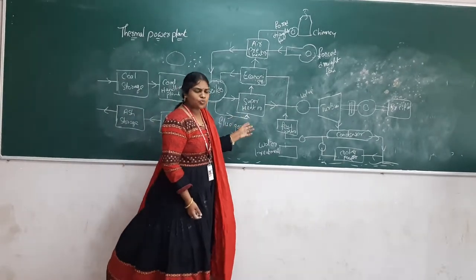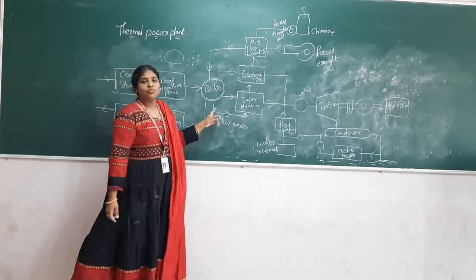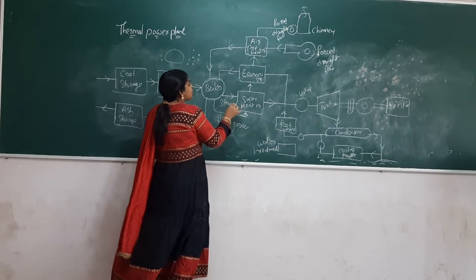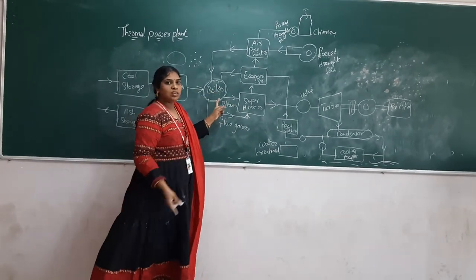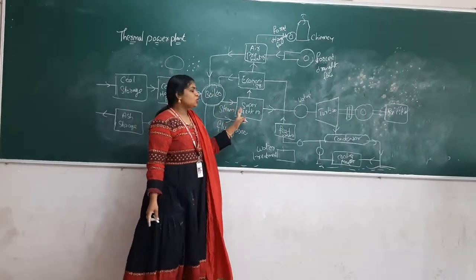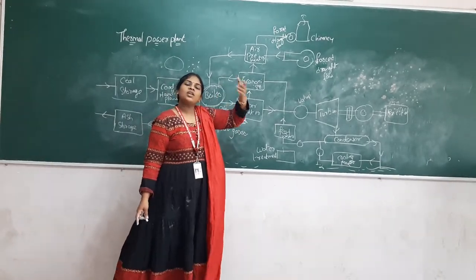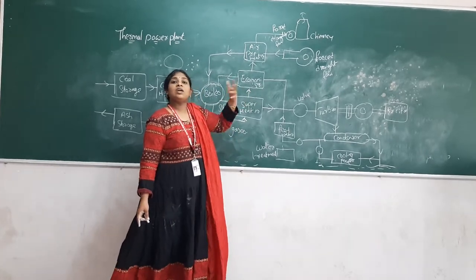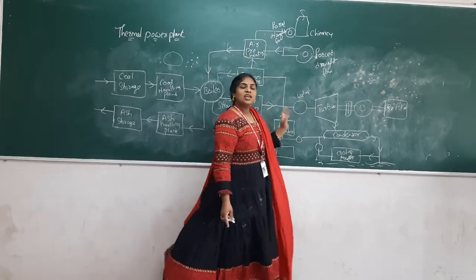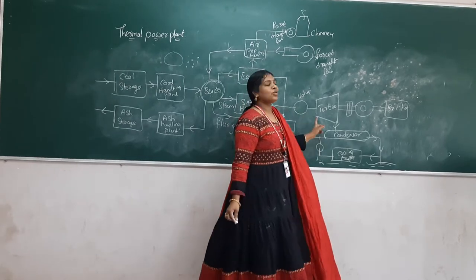Next is the superheater. The task of the superheater is to increase the pressure of the steam produced in the boiler. Whatever water is boiled above the boiling point in the boiler converts into steam. That steam is pumped through tubes to the superheater, where the steam goes beyond its boiling point and the pressure of the steam increases further. Then it is given to the turbine.